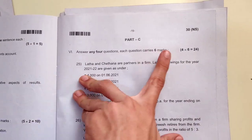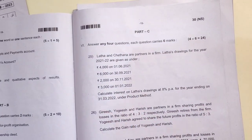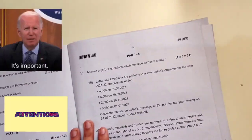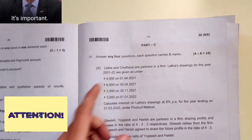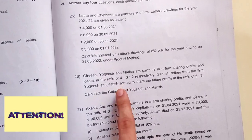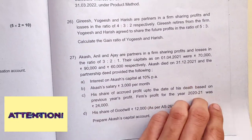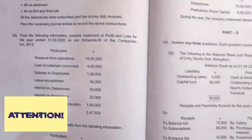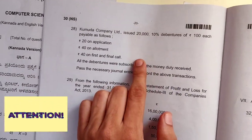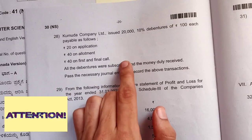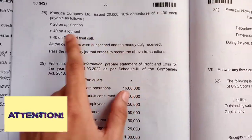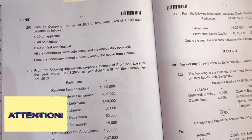I will tell you how to write in this video. This is the issue of debentures. The issue of debentures is 6 months. Don't be confused here — the issue of debentures is 6 months. These are the same length.